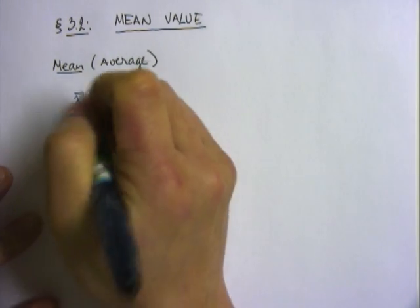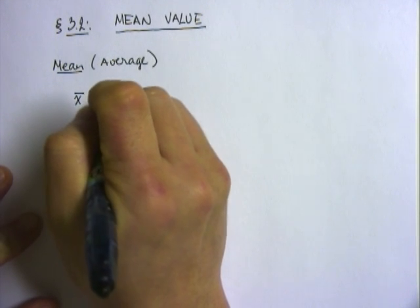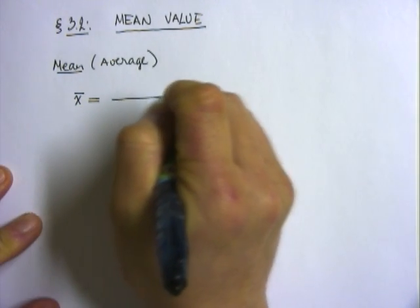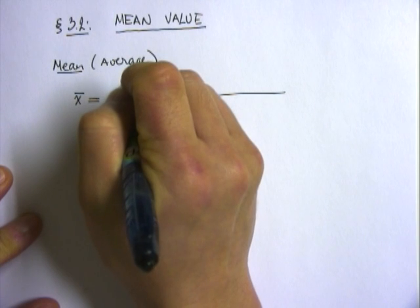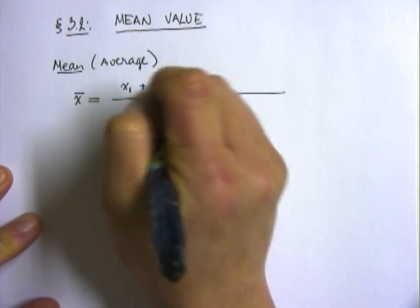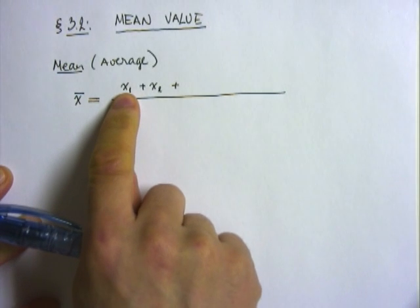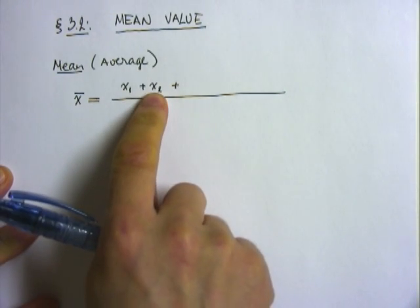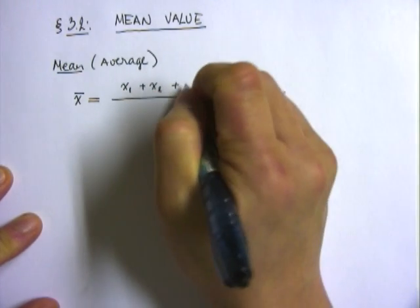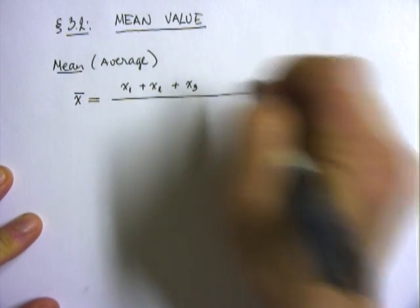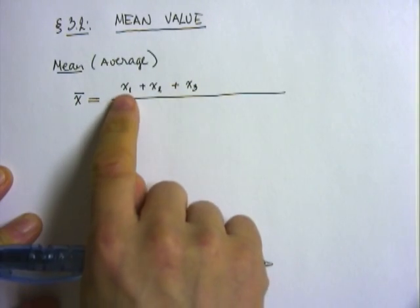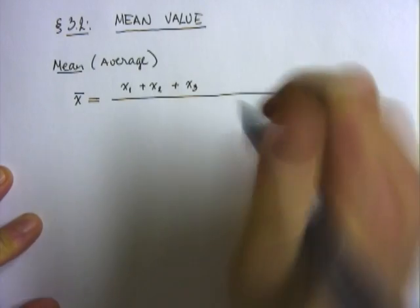The notation for the mean value is the x bar, the lowercase x with a bar. One solid way to find the average value is to simply add up all individual data items. So I'm gonna call x1 my first data item, x2 my second data item, and then x3 my third data item.